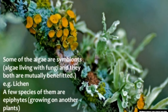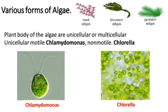Some algae are symbionts, meaning they are mutually benefited with other organisms. For example, algae living with fungi are mutually benefited - this is called lichen. A few species are epiphytes, growing on other plants or fungi.